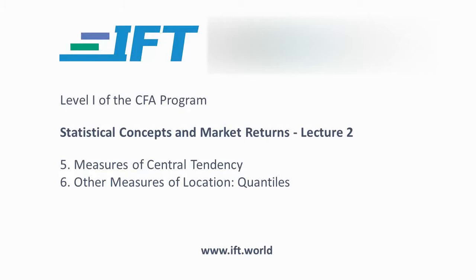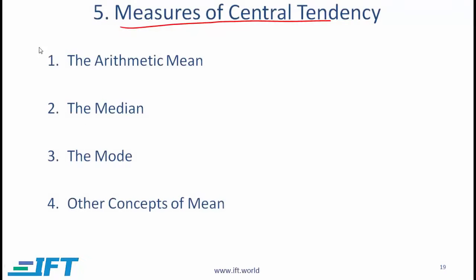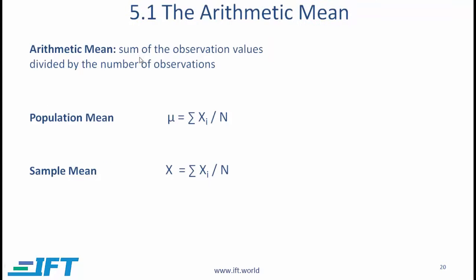Measures of central tendency — here are the different measures we will talk about. The arithmetic mean is the simplest measure of central tendency. We arrive at it by adding all the observations and then dividing by the number of observations.